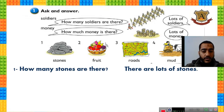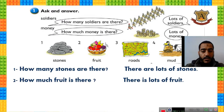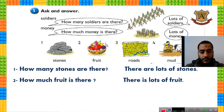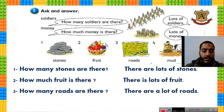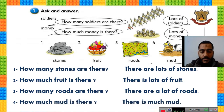Number two: we have fruit. How much fruit is there? There is lots of fruit. Number three: How many roads are there? There are a lot of roads — because roads is plural. Number four: mud — mud is singular or uncountable. How much mud is there? There is much mud.